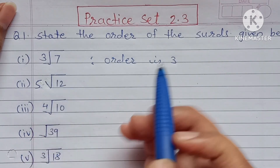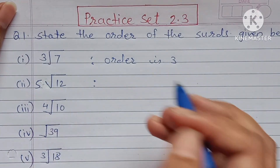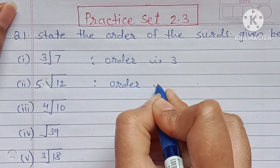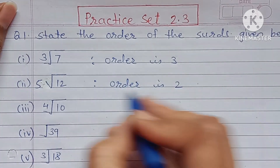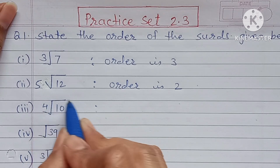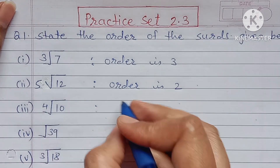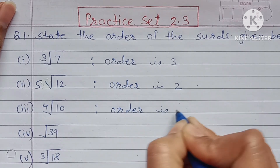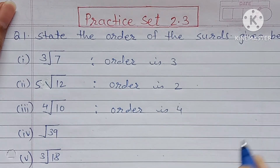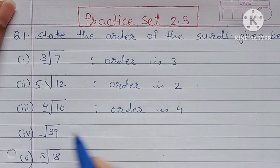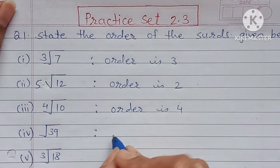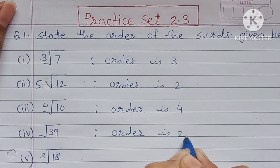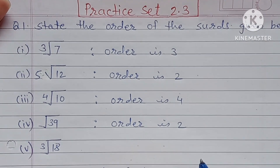5th root of 12 — here order is 2. 4th root of 10 — order is 4. Square root of 39 — square root means order is 2, so order is 2.